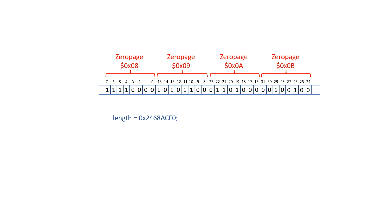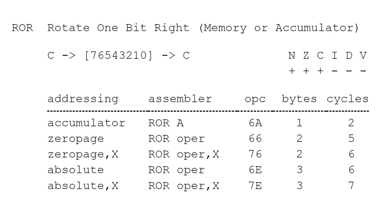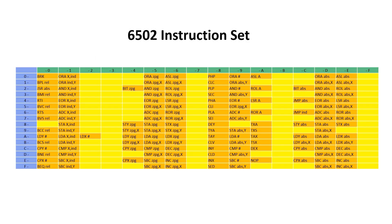Hopefully you can see that rotates are really useful for larger data types, and in particular floating point numbers, where we need to align the mantissa to do an add or a subtract. We looked at shift left previously, so now we'll look at rotate right — specifically rotate right zero page, rotate right A, and rotate right absolute.